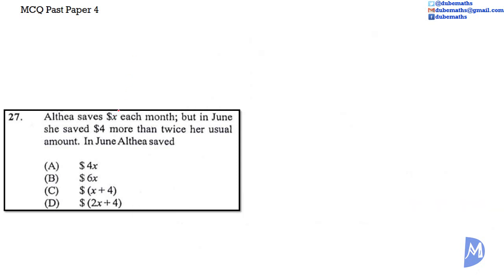Althea saves X dollars each month. In June, she saved 4 dollars more than twice her usual amount. Twice her usual amount is the same as 2 times her usual amount, or 2 multiplied by X, or 2X. 4 more than 2X is 2X plus 4. The answer is D.